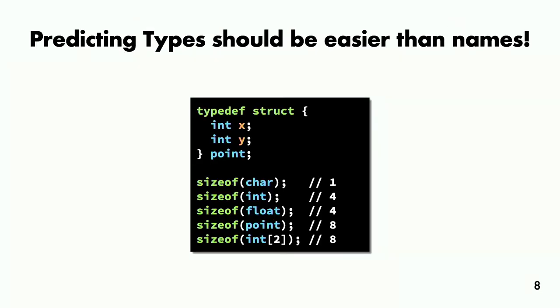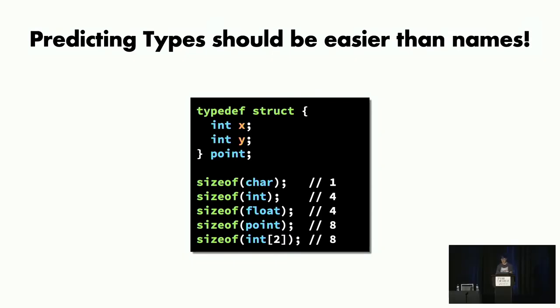If you think about it, predicting types should actually be easier than predicting names. Unlike names, types naturally have a set of constraints. For example, the C standard defines a character type as a single byte. That means in most architectures, you cannot replace a character type with an int type or a float type. This greatly reduces the search space. Instead of just conditioning on the context of a variable, you can also ask the decompiler how large the variable is in bytes and use it as a constraint on your prediction.